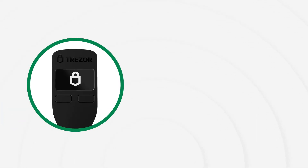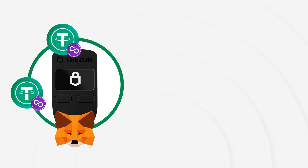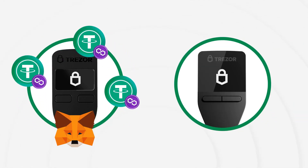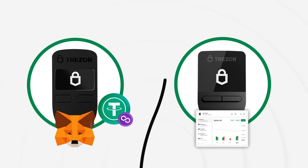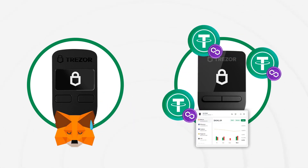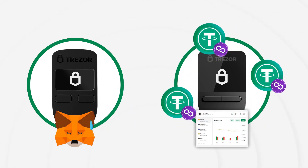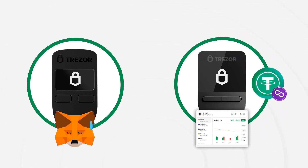In the Trezor 1 wallet, if you want to store USDD you must link the wallet with MetaMask. In the new Trezor Safe 3, you no longer need to do that process — the wallet is already integrated with the Polygon network, so you can now store USDD directly in the wallet using the Trezor Suite app.